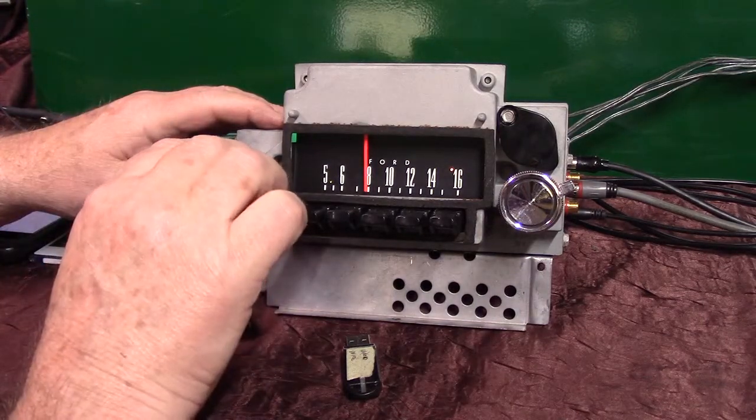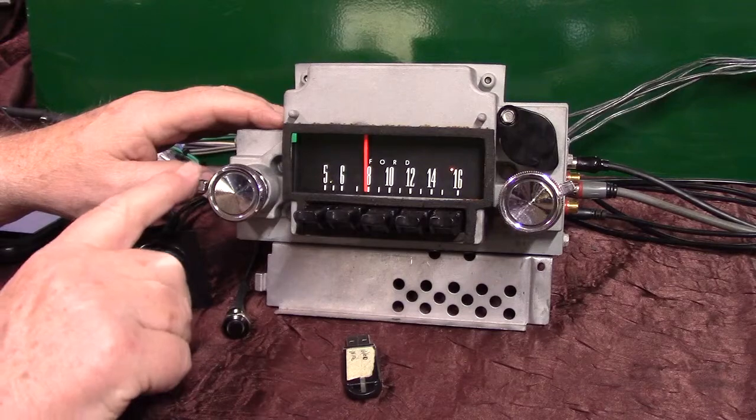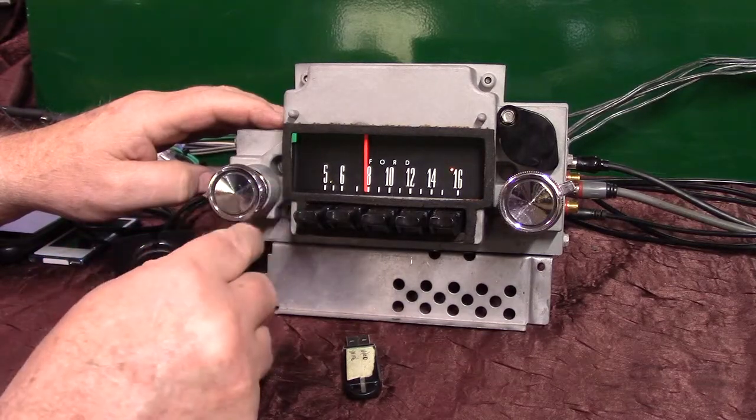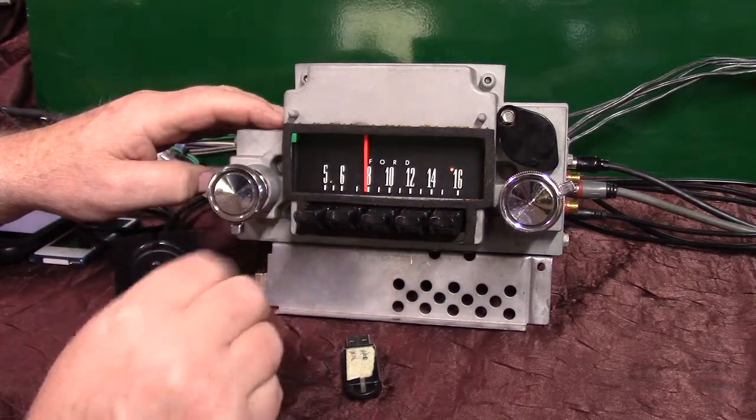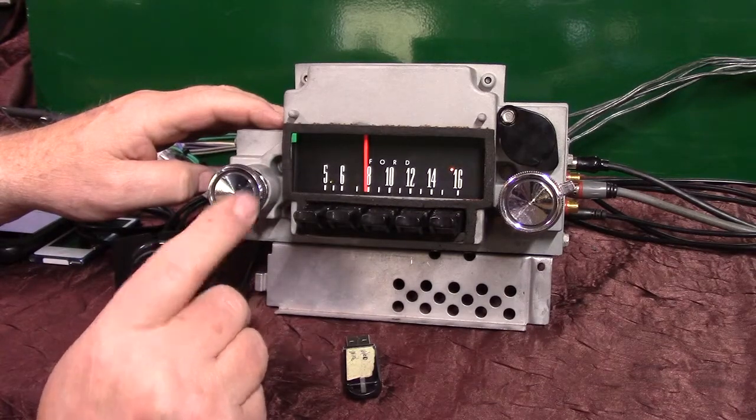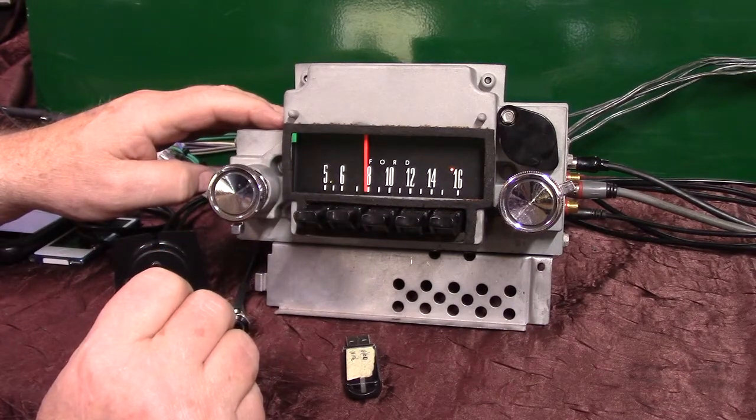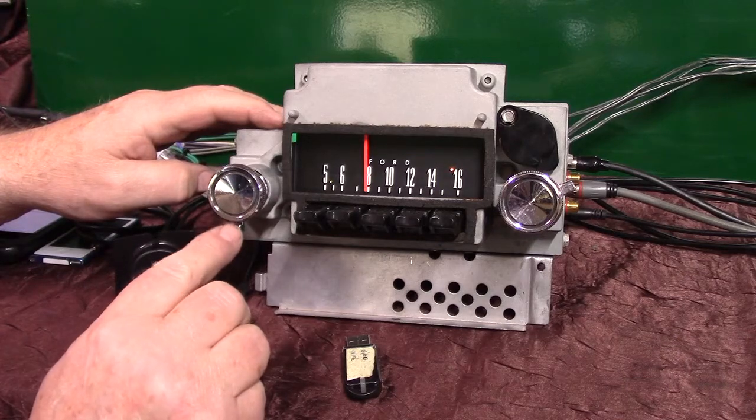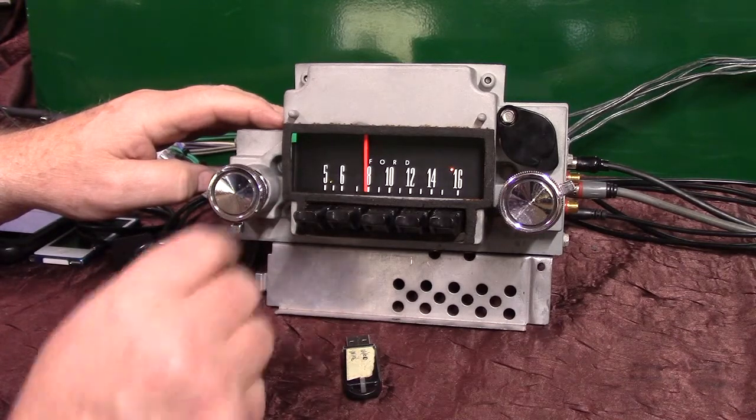We're going to do the balance and the fader. We're wide open treble, wide open bass. Just take it back about halfway. We're going to go in the fader first by going clockwise with the toner control. She will come on and say you're in the fader adjust. As long as, after she says it, as long as you're moving this, you can fade from front to rear.